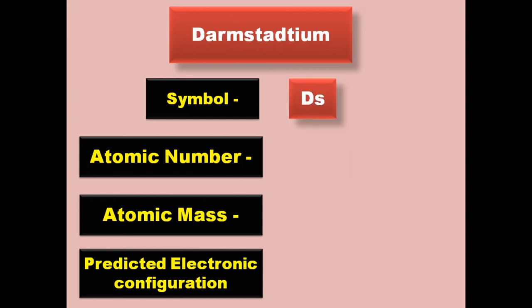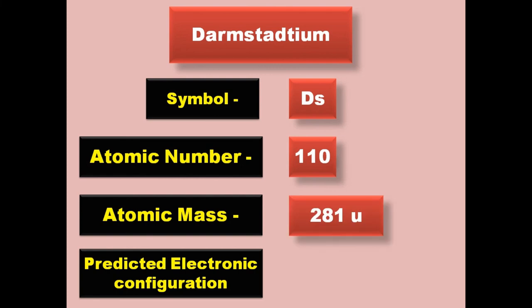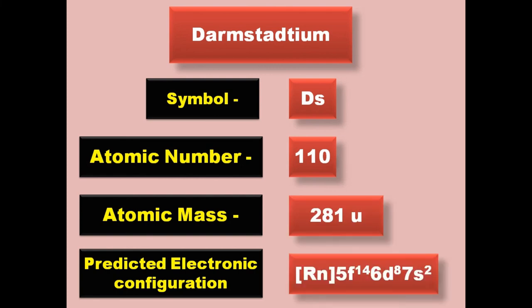Darmstadtium has symbol Ds, atomic number 110, atomic mass 281, predicted electronic configuration [Rn] 5f14 6d8 7s2. Darmstadtium is a transition metal and is expected to be solid at room temperature.